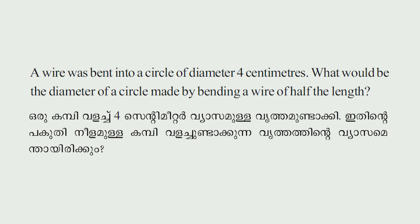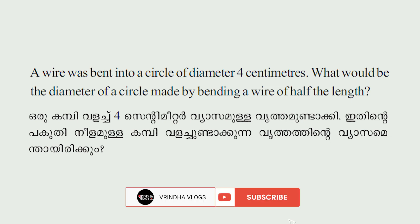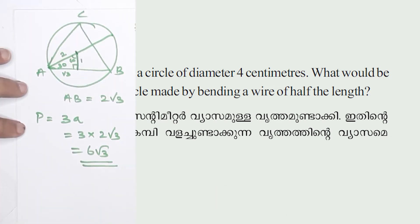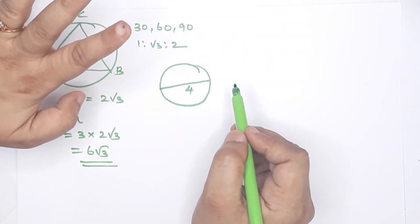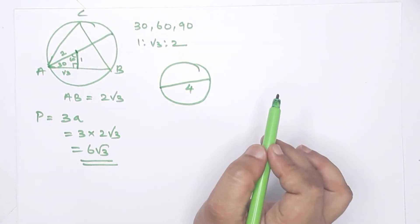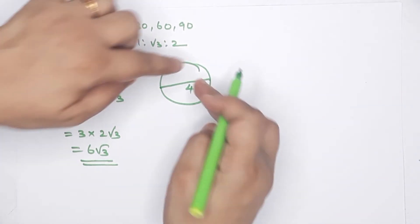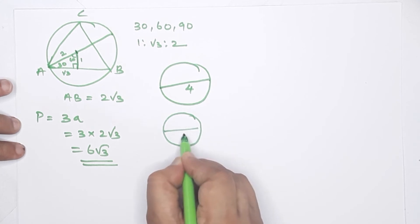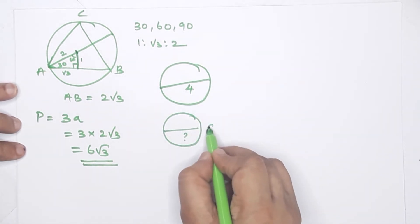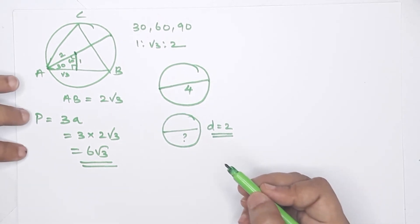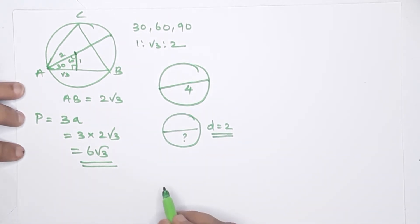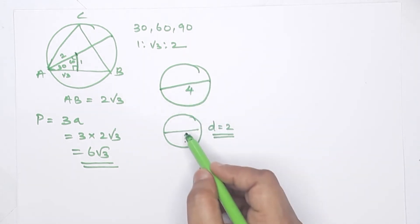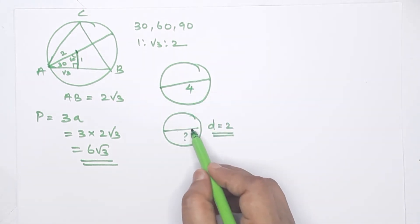Next problem: A wire was bent into a circle of diameter 4 centimeters. What would be the diameter of a circle made by bending a wire of half the length? The perimeters of circles are scaled by the same factor as the diameters, so the new diameter scales by the same half factor, giving diameter 2.